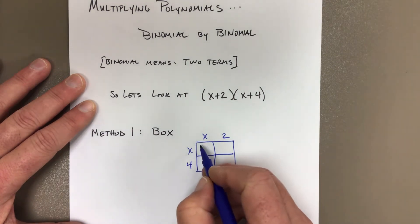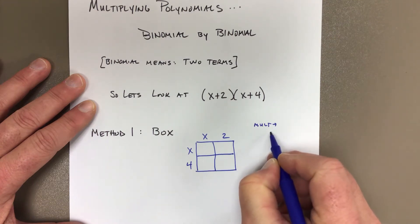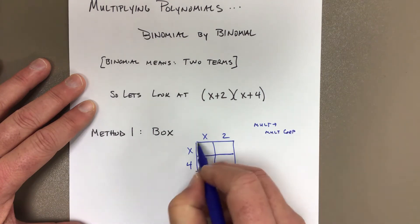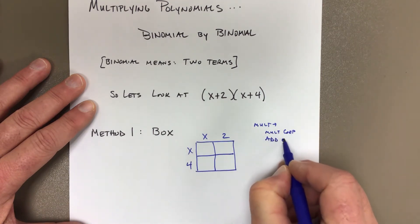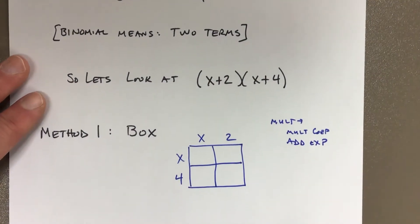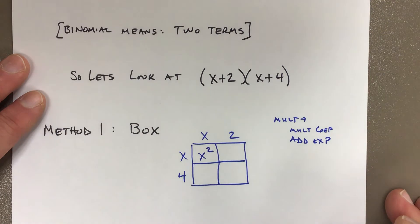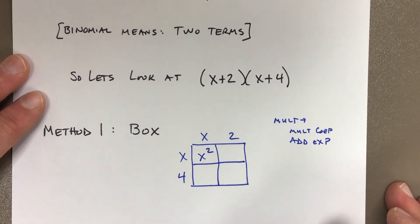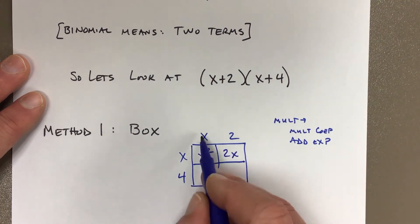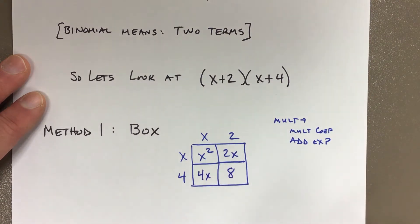Remember that when we multiply, we multiply the coefficients — that's the big number attached — and we add the exponents. So x times x is x squared; that's something you're just going to have to get used to. Then x times 2 is 2x, 4 times x is 4x, and 4 times 2 is 8. There's your box filled in.